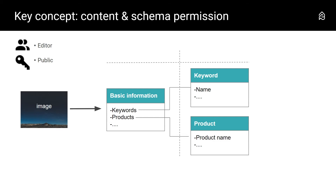Next time an editor uploads an image and wants to tag it with this particular keyword, it will be available. The same goes for the field 'products' — the editor can choose from the existing list of products. But here is the key point: as administrator, you do not want your editor to create new products. Your product list is very structured with specific product codes, namings, and classifications that you want to keep 100% in control.